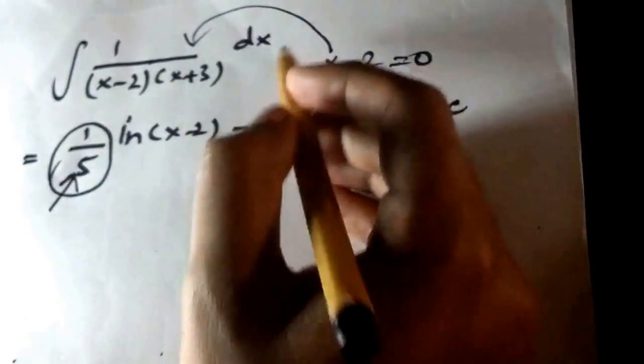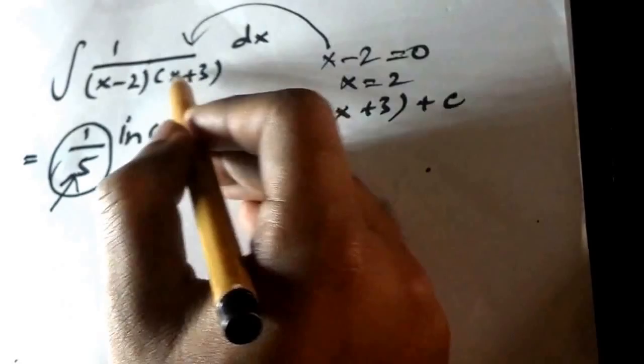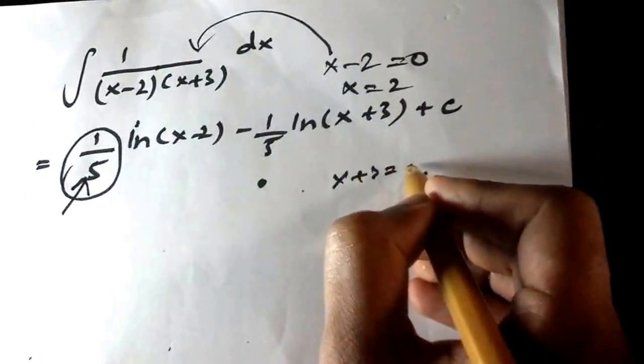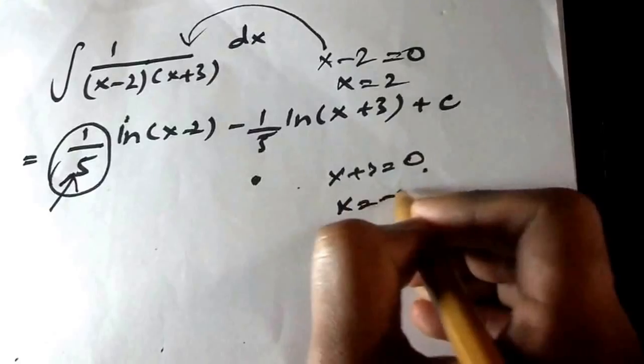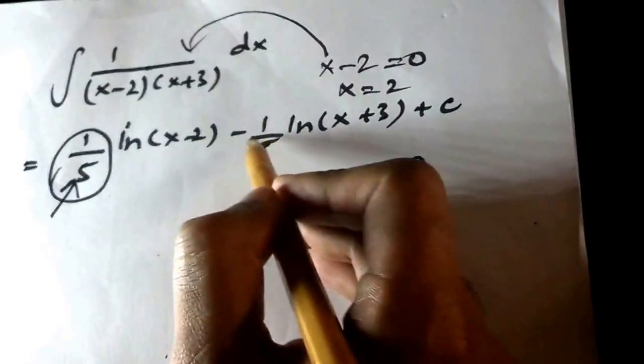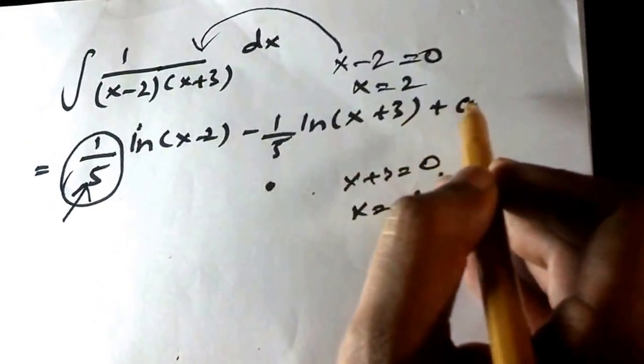So in the same way I will put x plus 3 equals to 0 in my brain and x is equal to minus 3 in the equation, just solving it to get minus 1 by 5 ln x plus 3 plus c.